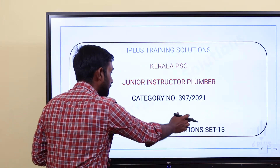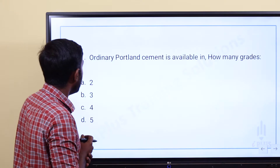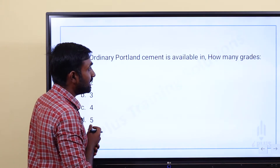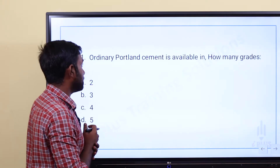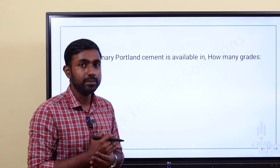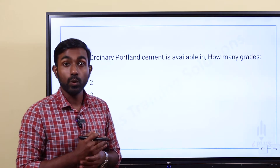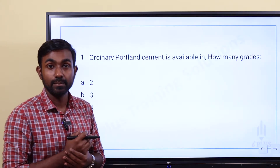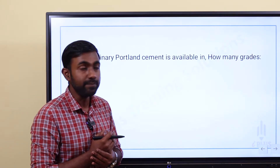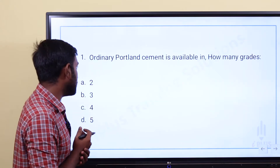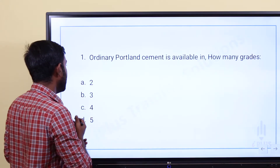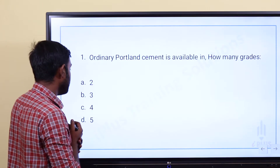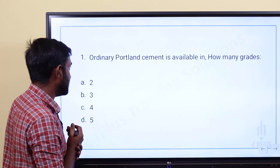Let's talk about one thing. Ordinary Portland cement is available in how many grades? Option A: 2, Option B: 3, Option C: 4, Option D: 5.